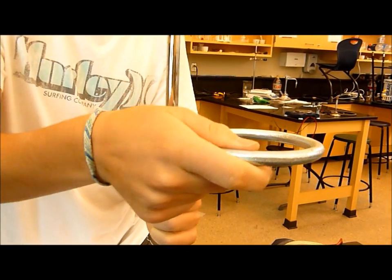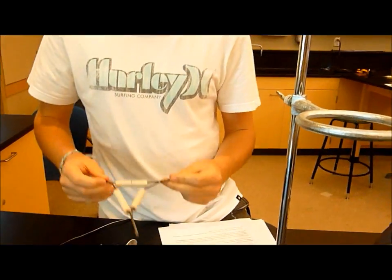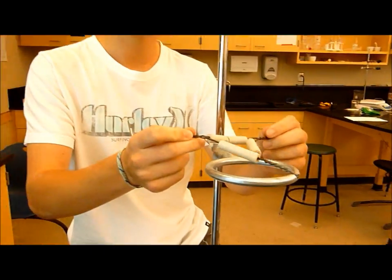and then screw it back until it's nice and secure, so that it won't slide up or down. Then, what you need to do, is take your clay triangle, and put it on the ring stand.